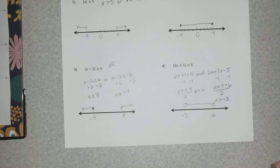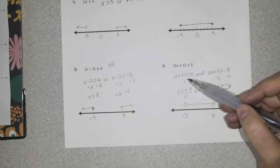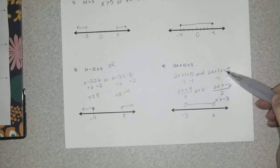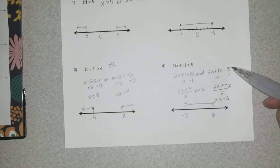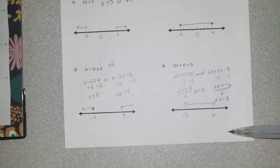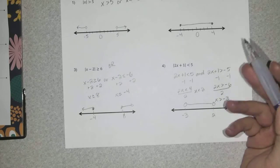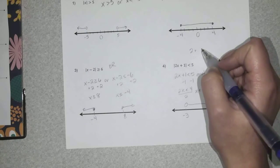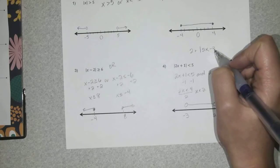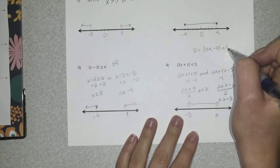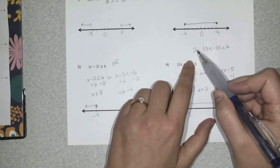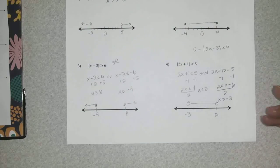To summarize: when you have absolute value bars, you make two inequalities — one stays exactly the same, and the other makes two changes: flip the sign and add the negative. One more note: if there's something outside the absolute value bars, like '2 plus the absolute value of something,' you must get rid of whatever is outside first — for example, subtract 2 from both sides — before splitting into two inequalities. That's it, thanks for watching.